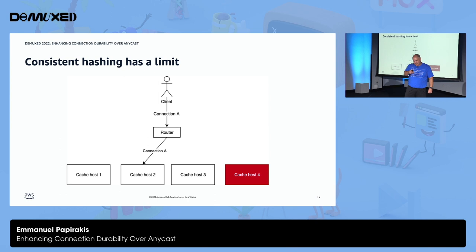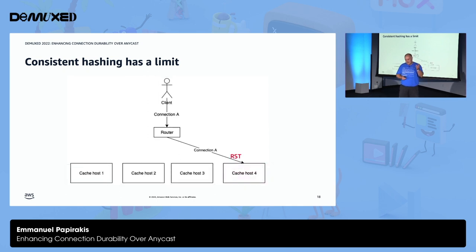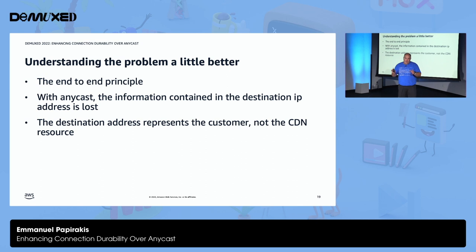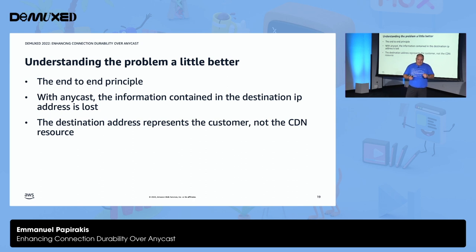One idea is consistent hashing to solve the ownership problem, but it's not perfect. If a host is out, your client might be connected to a different host, and when it comes back in, it takes ownership, sends a reset, and severs the connection. When the connection is severed, packets in flight still carry the client's IP address, so for a period of time your client could be downloading two streams. The real problem with anycast is that it breaks the end-to-end principle. The internet was designed with the idea that source IP and destination IP uniquely identify machines. Anycast breaks that assumption, and the internet is not completely robust to this because some original design assumptions are violated — the information in the destination IP that was intended to be there is now lost.